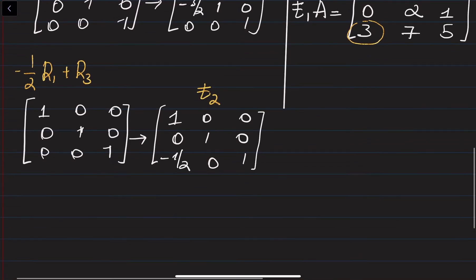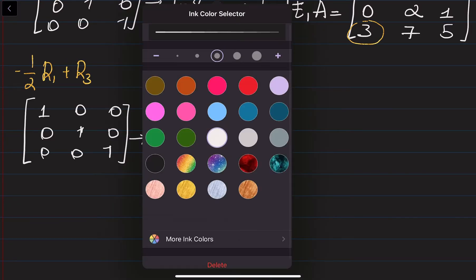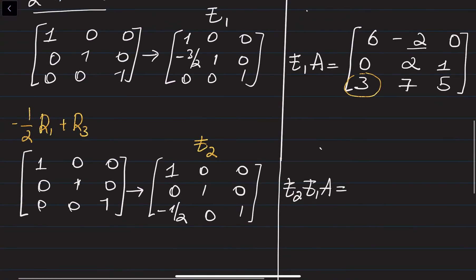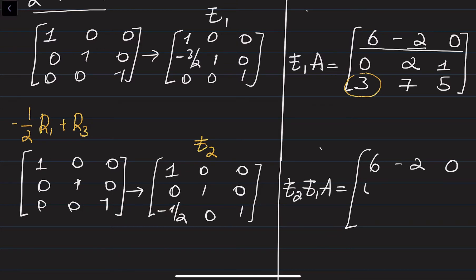Continuing, multiplying E2 to E1 to A: multiply all entries by -1/2 and add them to the third row. The result is [[6, -2, 0], [0, 2, 1], [0, 8, 5]]. The 3 becomes 0 because -2 times -1/2 gives plus 1, which added to 7 gives 8. And 0 times -1/2 plus 5 is simply 5. This is how we get rid of that 3 using the elementary matrix.